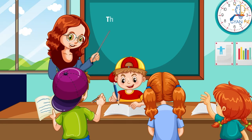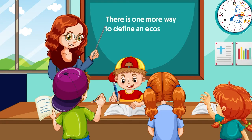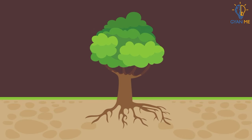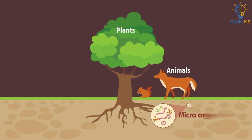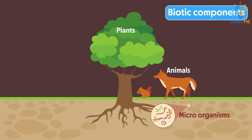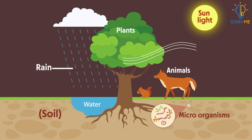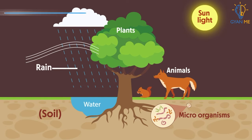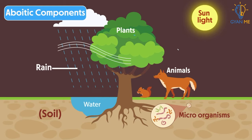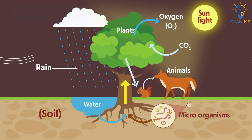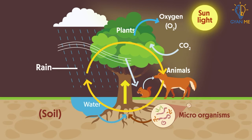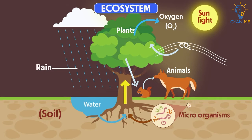But students, do you know that there is one more way to define an ecosystem? All living organisms such as plants, animals, microorganisms, and human beings — collectively referred to as biotic components — and all non-living components like soil, sunlight, air, water, temperature, etc. — collectively referred to as abiotic components — interact with each other within specific locations or their surrounding environment. This continuous interaction in their environment with each other takes place in a system called an ecosystem.